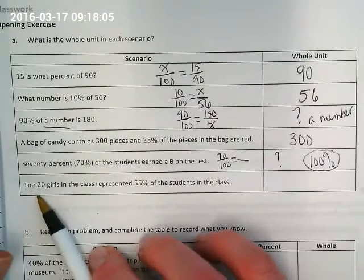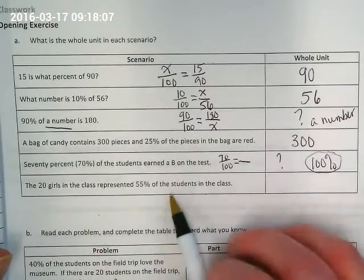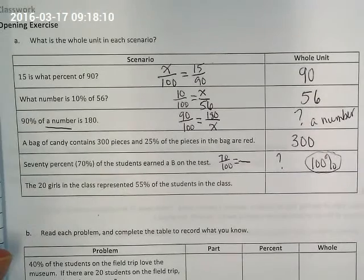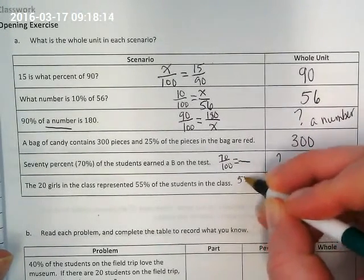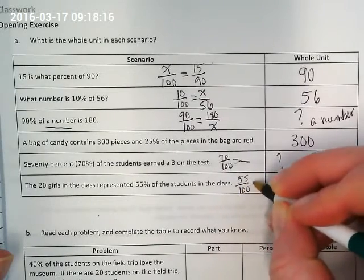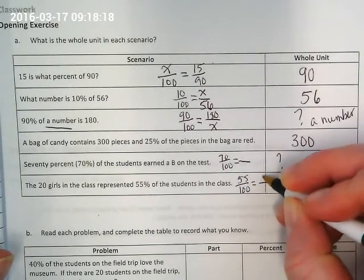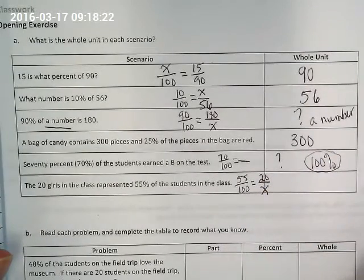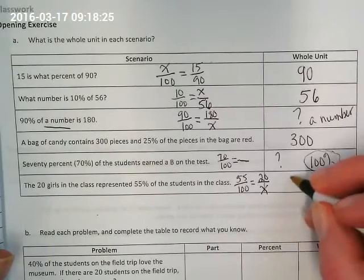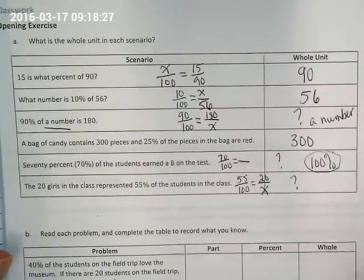Okay, and the last one. The 20 girls in the class represented 55% of the students in the class. Okay, so now we know 55% is the 20 girls. Do we know how many total are in the class? No. No, we have to set up a proportion to find the whole.